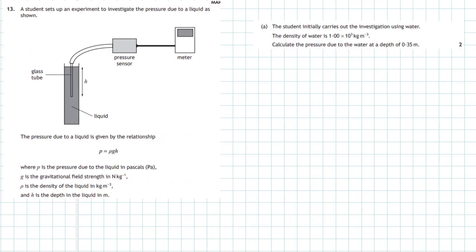Question 13 of the 2018 Higher Physics examination, from section 2. A student sets up an experiment to investigate the pressure due to a liquid, as shown in the diagram. There is a meter attached with a tube to a pressure sensor, which is attached by another tube to a glass tube immersed in water. When the glass tube goes into the liquid at a certain depth, the pressure sensor registers the change in pressure, which is recorded on the meter.